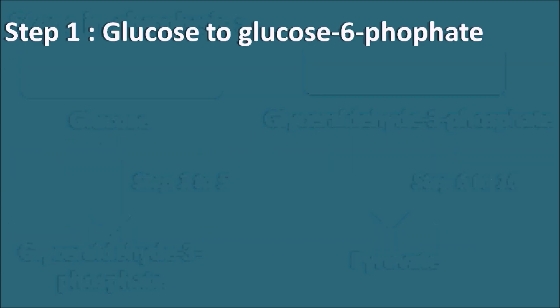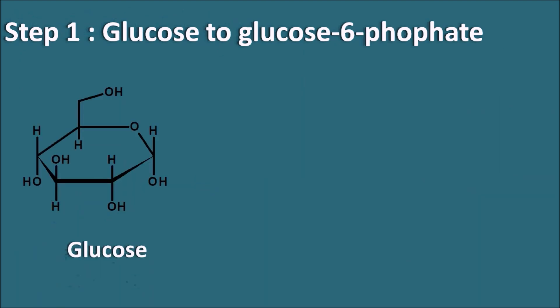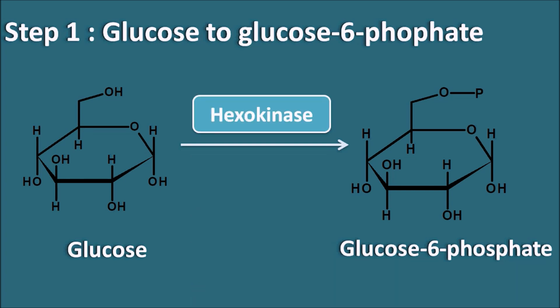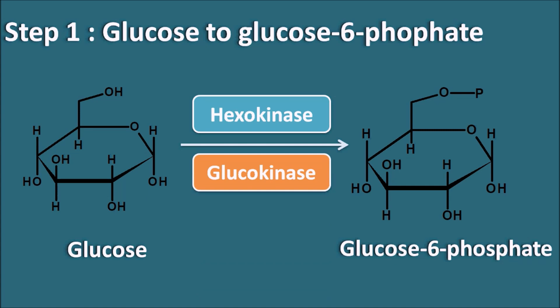Step 1 is the conversion of glucose to glucose-6-phosphate. Glucose is not a good reactant because the hydroxyl group is less reactive, but when converted to phosphate it becomes highly reactive. Since this step involves phosphorylation, the enzyme is a kinase — specifically hexokinase, because glucose is a hexose, or more specifically glucokinase. This is an endergonic reaction requiring energy from ATP, which is converted to ADP, with magnesium as a cofactor. This is the first step where ATP is consumed.